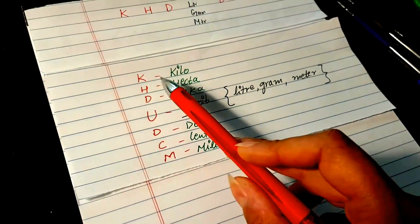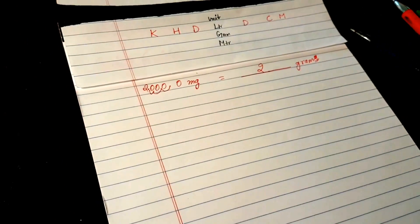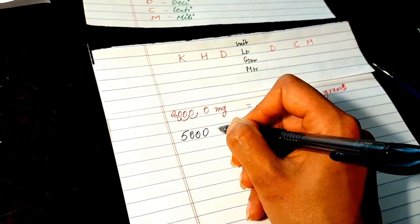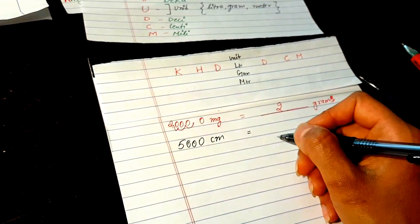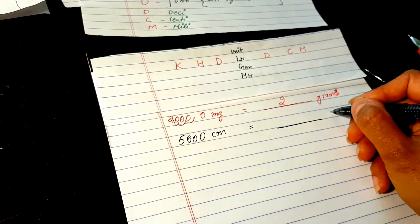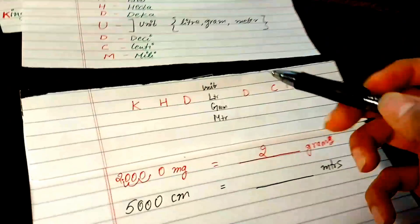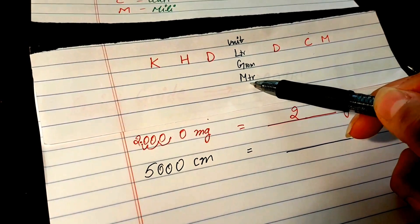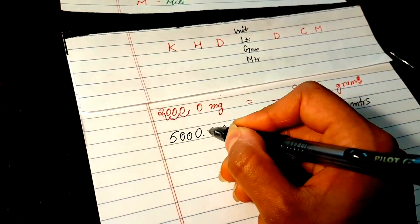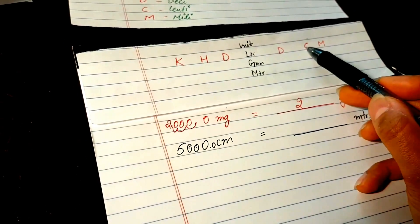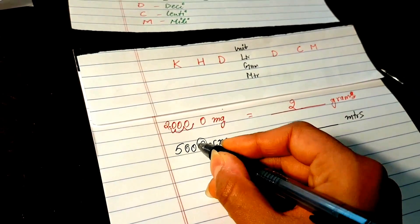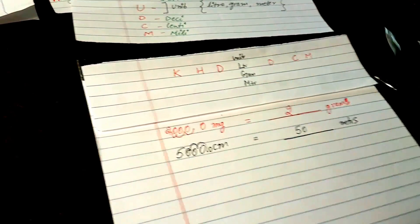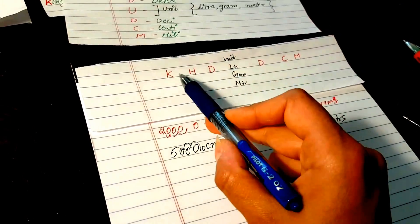Let's do another example: convert 5000 centimeters to meters. On the table, centimeters is here and meters is here. Meters is two places to the left of centimeters, so we move the decimal two places to the left, giving us 50 meters.